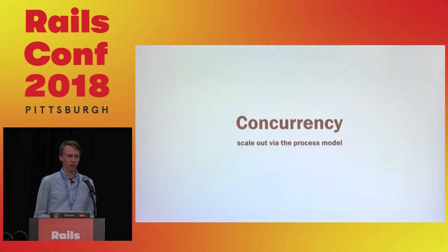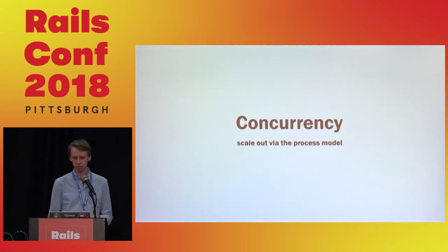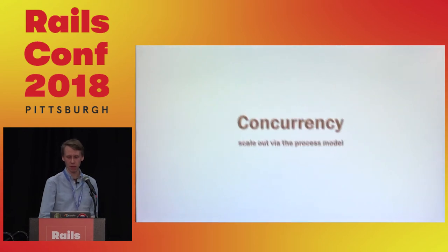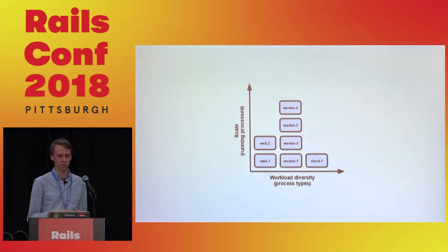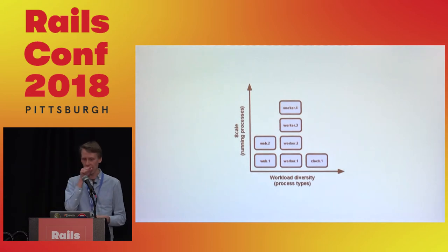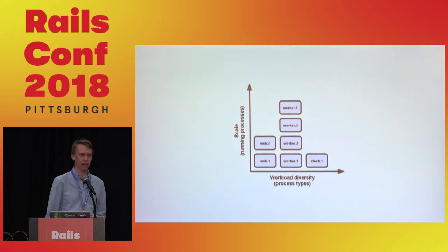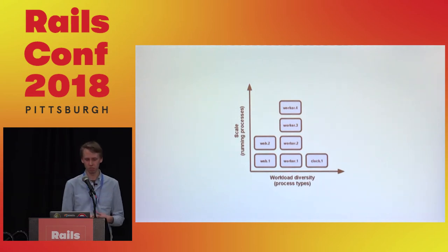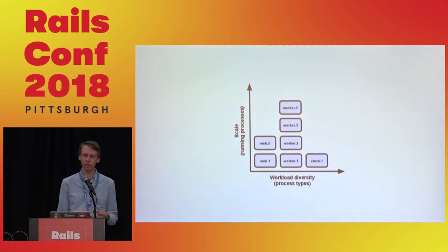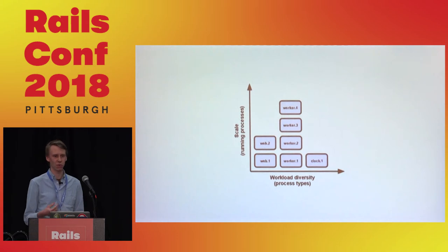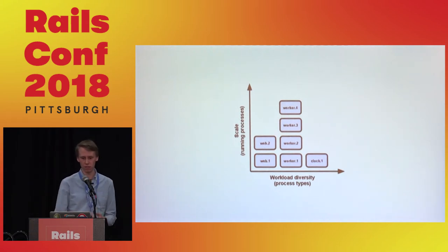Another aspect of 12-factor apps is concurrency, which allows your app to scale with the process model. The illustration shows you have web workers and some job workers which you can scale up and down. To be able to successfully scale these workers, they should not share any kind of resources together, because if they all had a bottleneck of just one shared resource, they would not scale very successfully.